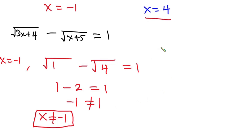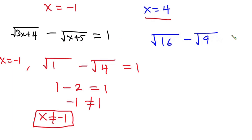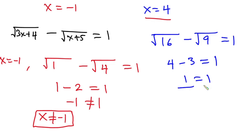Now let's try x equals 4. We have square root of (3 times 4 plus 4) equals square root of 16, minus square root of (4 plus 5) equals square root of 9. Square root of 16 is 4, minus square root of 9 which is 3, equals 1. The left-hand side equals the right-hand side, so we conclude that the value of x is 4.